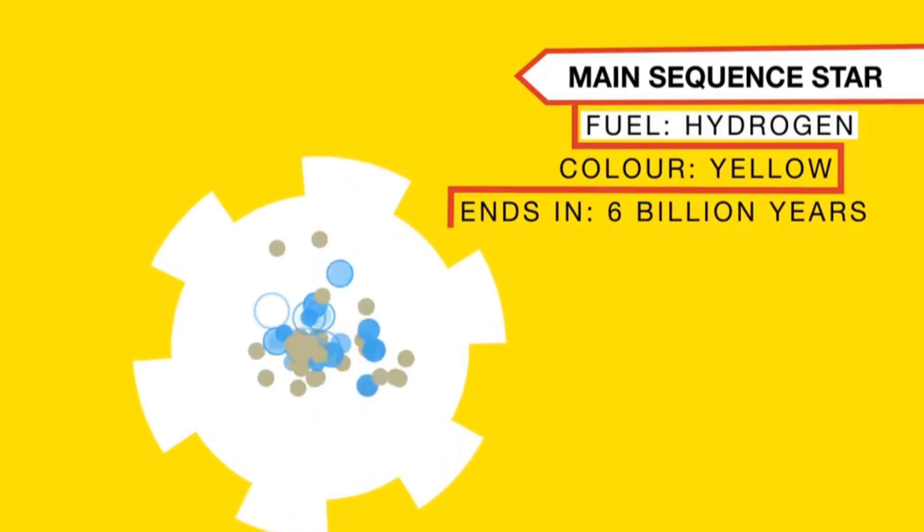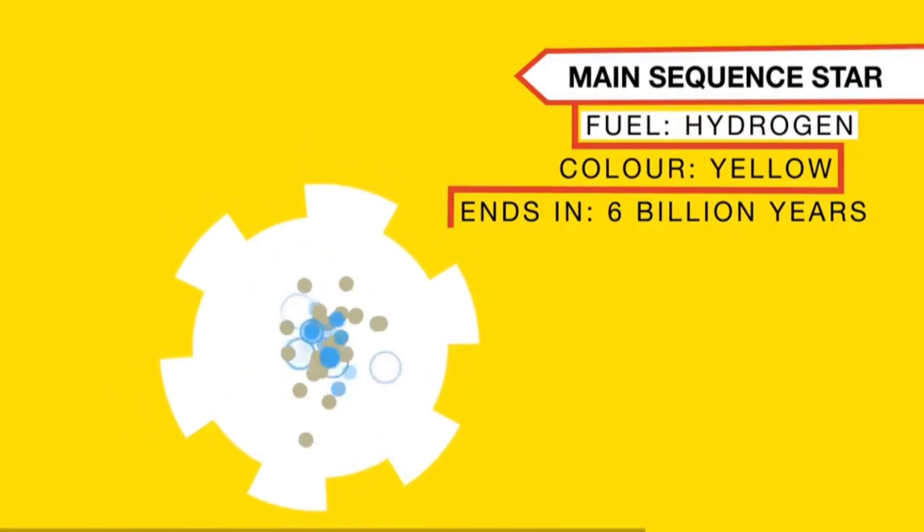The Sun alternates between stormy and calmer periods every 11 years or so. These cycles are related to their magnetic activity, and from Earth we study them through spots and solar flares.